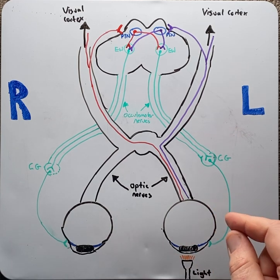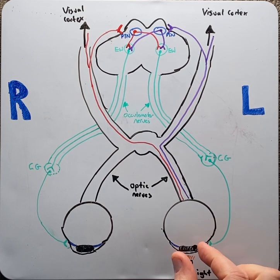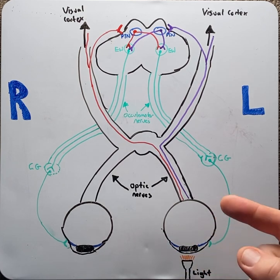The pupil light reflex results in the constriction of the pupil in response to light.